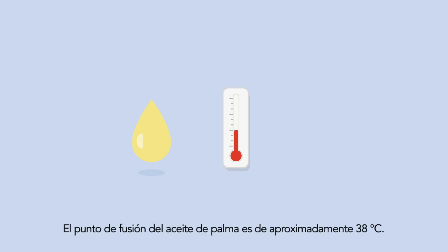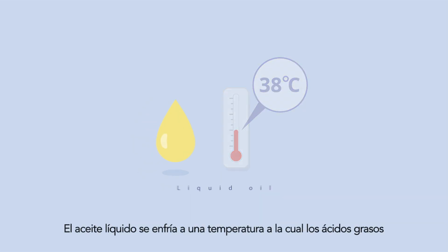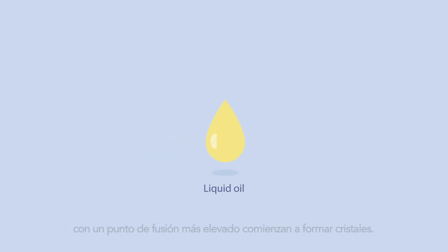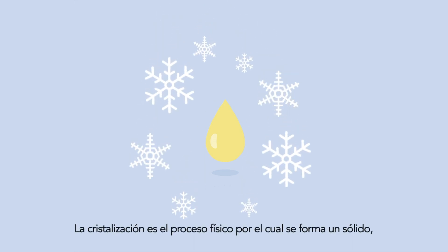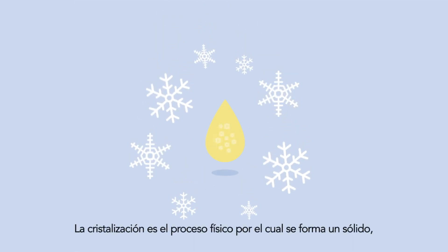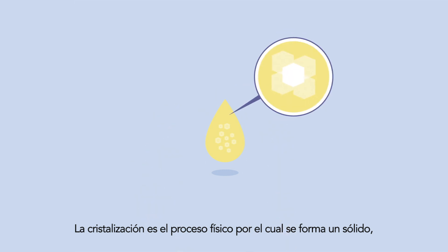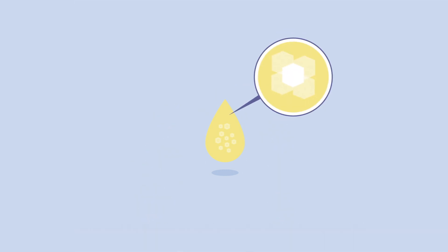The melting point of palm oil is around 38 degrees Celsius. The liquid oil is cooled down to a temperature at which fatty acids with a higher melting point start to form crystals. Crystallization is the physical process by which a solid forms, where the atoms or molecules are highly organized into a structure known as a crystal.